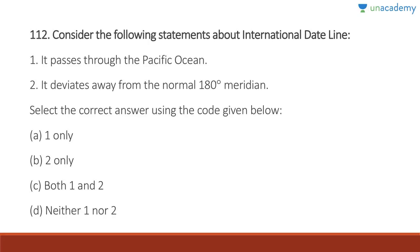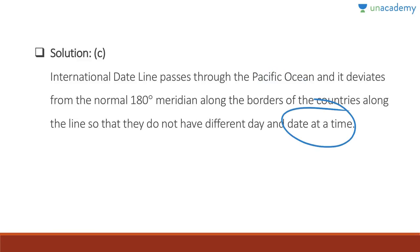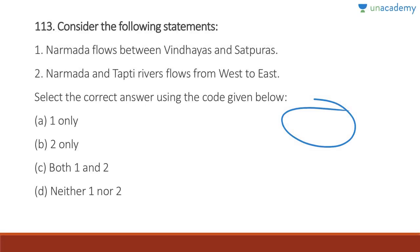Question 112: The International Date Line passes through the Pacific Ocean — absolutely correct. It deviates away from the normal 180-degree meridian — also correct. Answer is C, both one and two. The IDL passes through the Pacific Ocean and deviates so that islands and countries are not split across different days and dates at the same time.